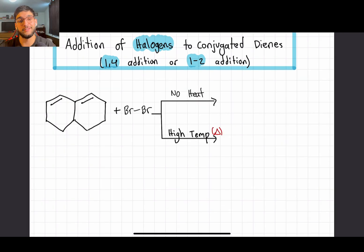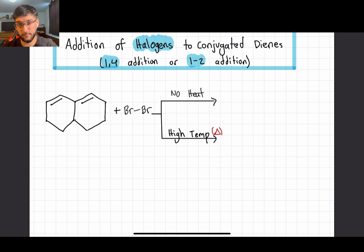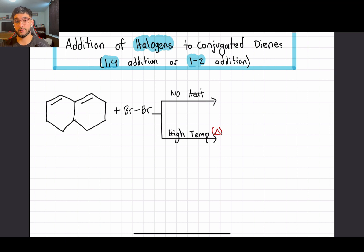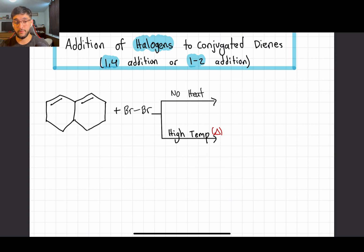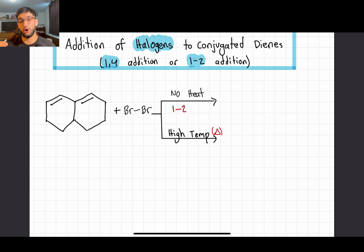So stay tuned and you'll be able to solve any of these problems a little bit quicker and more accurately on exams. To kick off our first example, before we hop into the reaction and mechanism, I want to explain something that will help us in the long run. For all of these reactions, there are always going to be two products — one major and one minor. The easiest way to tell which is which: if there is no heat, we always get the 1,2 addition, and if there is heat, we get the 1,4 addition.